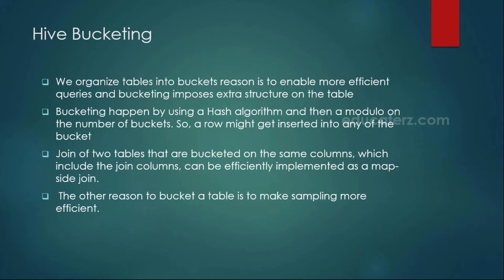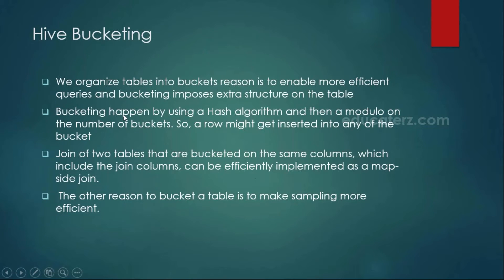The advantage is that instead of navigating across all million records, it can simply go to that specific bucket and fetch the record from there. Bucketing organizes the table into multiple buckets to get more efficient queries. Both partitioning and bucketing are mainly used to improve performance. The hash algorithm stores all details into those specific buckets, and all data fits within the given buckets.